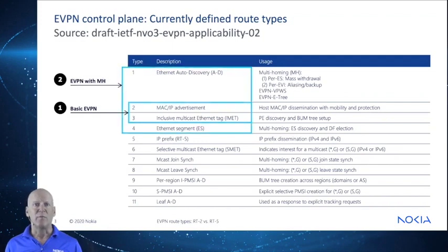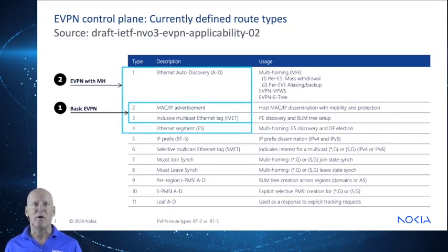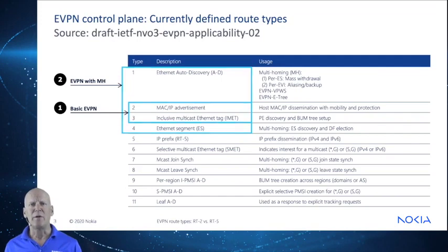The second group is for advertising multi-homing capabilities. RT1 is for Ethernet segment auto-discovery and multi-homing support, including MAC address mass withdrawal messages and propagation of service topology information. RT4 advertises multi-homing status for active-active and active-standby, as well as designated forwarder election. You can learn more about EVPN multi-homing in our Tech Talks in 10 multi-homing video.